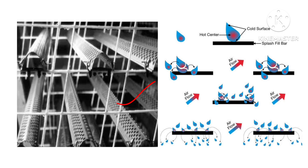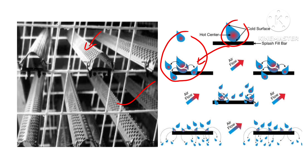The purpose of splash type fills is also to increase the surface area of water, but it works in a different way. When bigger droplets of water fall on the surface of the fill, they get broken into finer droplets. You can see here — the big droplet of water gets converted into fine droplets, and due to this conversion from bigger to smaller droplets, the surface area gets increased many times.